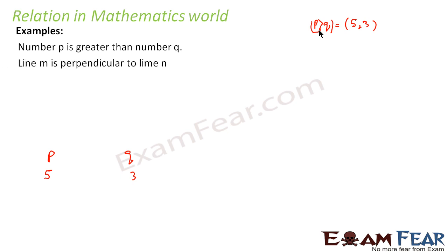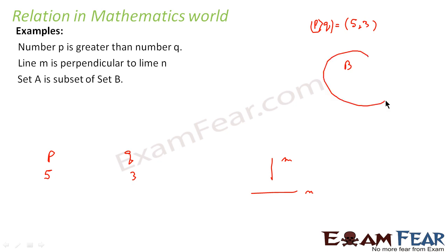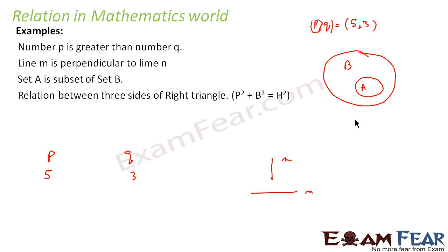Another example: line M is perpendicular to line N — this is also a relationship between two lines. Also, A is a subset of set B — if I have a bigger set B containing a smaller set A, there is a relationship between set A and set B. And in a right triangle, if this is perpendicular (P), this is base (B), and this is hypotenuse (H), then P² + B² = H² — that is the Pythagorean theorem. So this is also a relationship between the three sides P, B, and H for any right triangle.